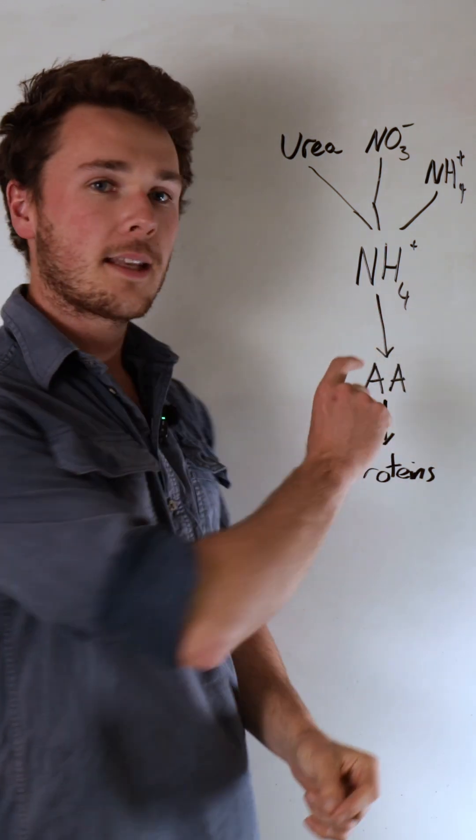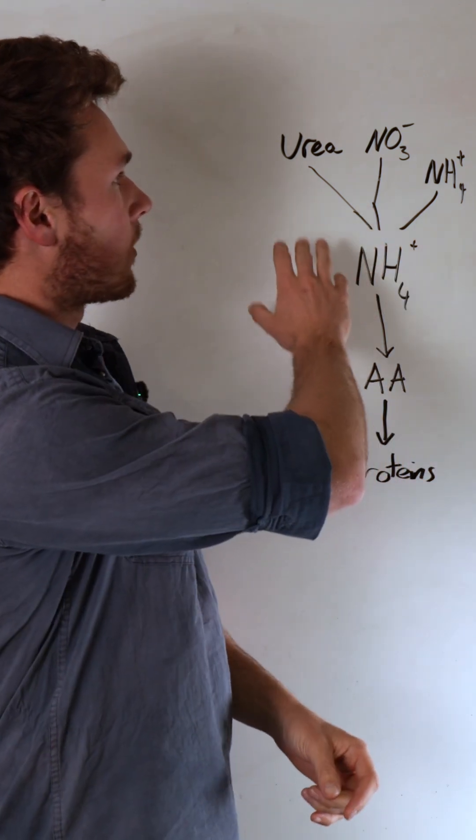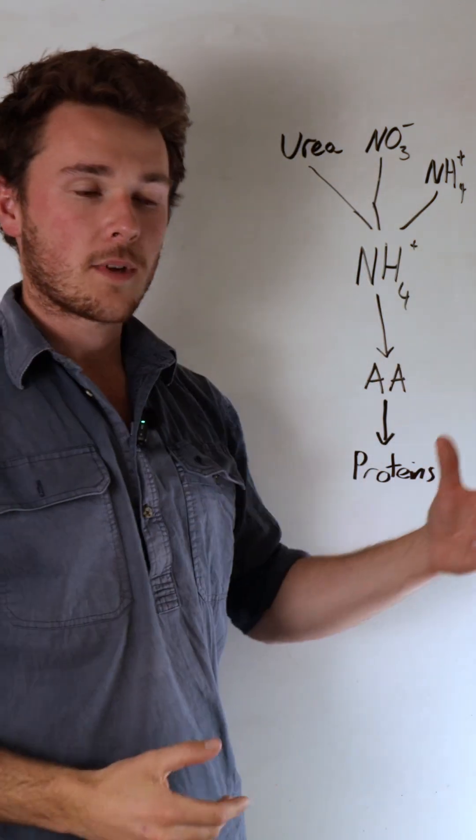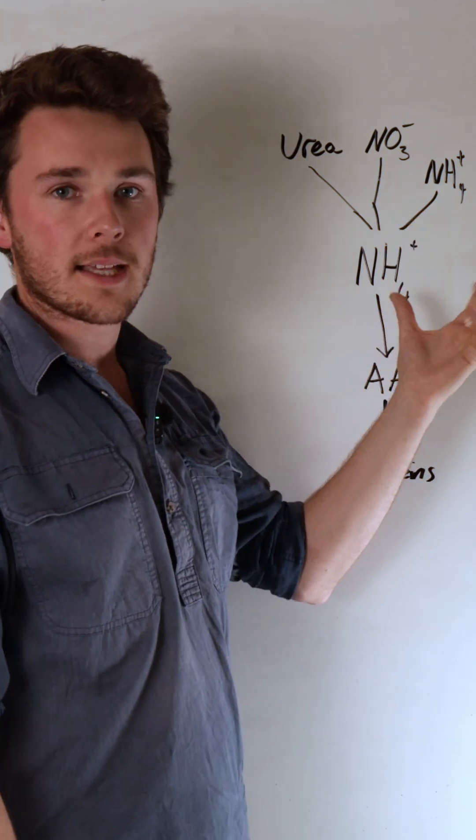and inside the plant needs to be first converted into ammonium. So regardless of whether it's nitrate or urea, it has to be converted into ammonium. Obviously, ammonium just stays as ammonium.